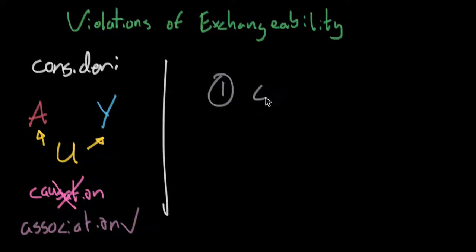Way number one, we call confounding. The other way people call this is common causes. So to the left, this diagram shows an example of a confounding variable, U. So this is a confounder. It is a common cause of both A and Y.